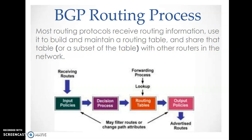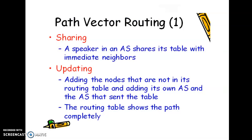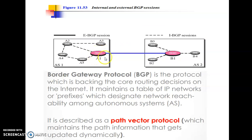That is the reason the name given to BGP is path vector routing. Now we will understand the different characteristics under path vector routing concerned with BGP. The first characteristic of BGP is sharing. A speaker node in an AS shares its routing table with its immediate neighbor. So from the diagram, A1 will share its routing table with the immediate neighbor B1 of a different autonomous system.